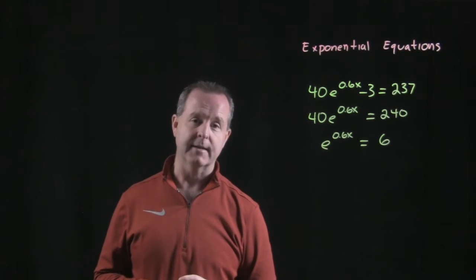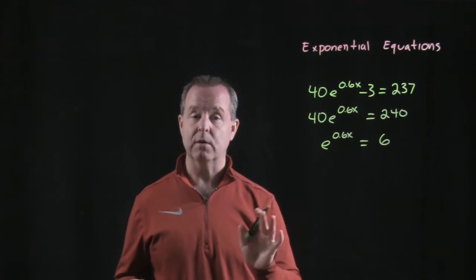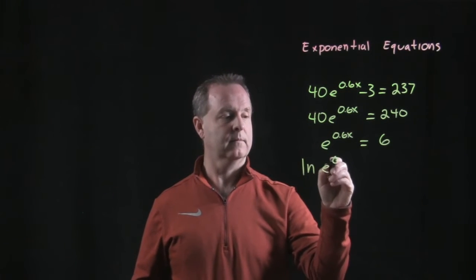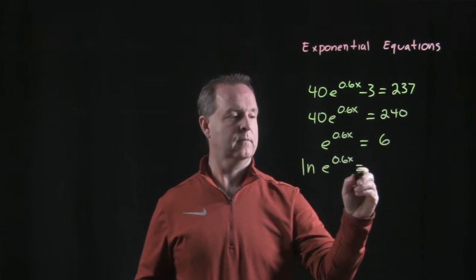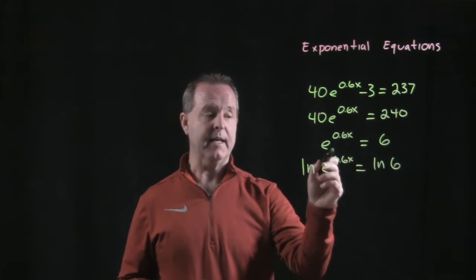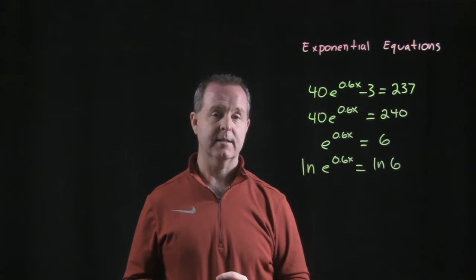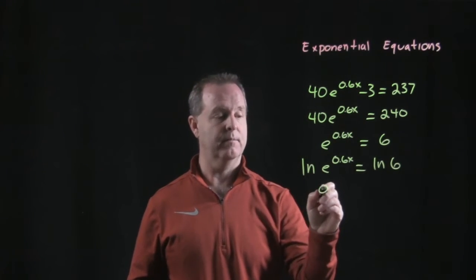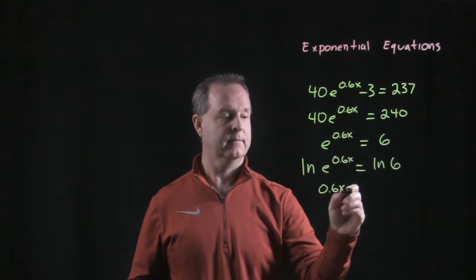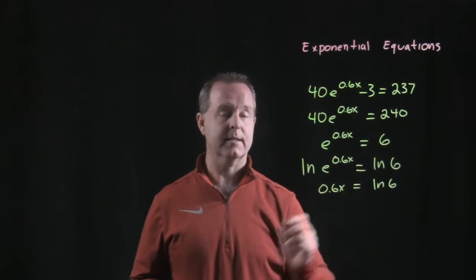Now how should we solve that? Let's take the natural log of both sides. The natural log of e to the 0.6x is just 0.6x, equals the log of 6.